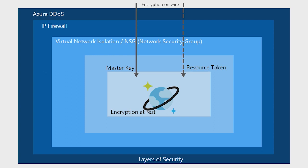The next layer is IP firewall. You can set up an IP firewall around Cosmos DB so only approved services and systems can access Cosmos DB. And then we have VNet also enabled on Cosmos DB. You can have a service endpoint of Cosmos DB defined so only services inside your VNet can access Cosmos DB. This is the second layer of security.